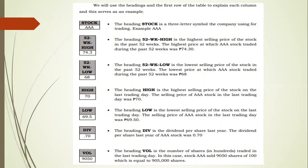The heading 'High' is the highest selling price of the stock on the last trading day. For AAA stock, the highest price on the last trading day was 70 pesos. The heading 'Low' is the lowest selling price on the last trading day; for AAA stock that was 69 pesos and 50 centavos.